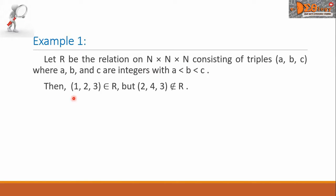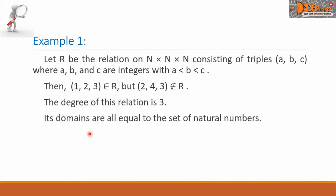Then, the relation 1, 2, 3 is an element of R, but the element 2, 4, 3 is not an element of R. The degree of this relation is 3. Its domains are all equal to the set of natural numbers.